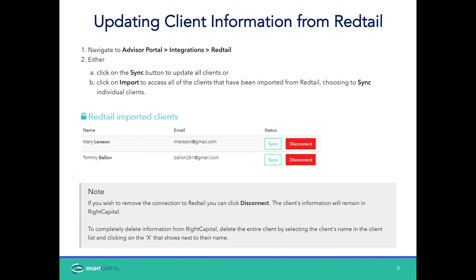For updating client information — once you've got them all set up and maybe want to do a fresh sync — it's very easy. Again, you're going to go to your Advisor Portal, go to Integrations, then Redtail. You've got a couple of options: either click the Sync button to update all clients, or click Import to access all the clients that have been imported from Redtail and choose distinct individual clients. So if you just want to sync everyone, you can. If you just want individual clients, click Import to access just certain clients.